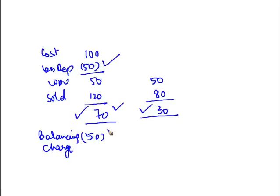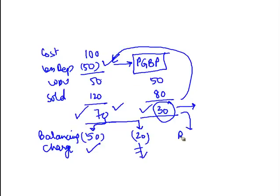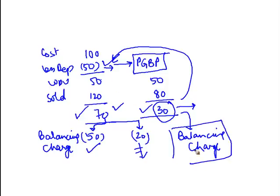The reason is that the 50 of depreciation was claimed in earlier years against profits and gains of business and profession. So if my gain is 70, I break it into two parts — 50 and 20. The 50 is taxable as balancing charge. Whereas in the case where my profit of 30 is less than the depreciation of 50, the entire 30 is chargeable as balancing charge. The idea is: whatever you have claimed as a reduction till date, to that extent if there are any gains, you charge it as PGBP income as balancing charge.